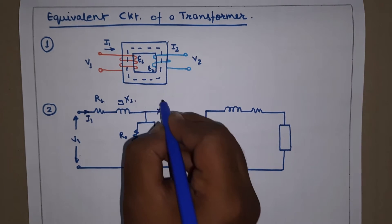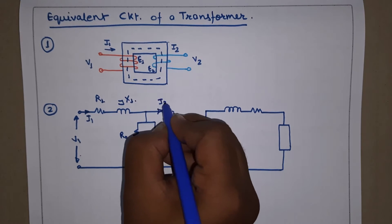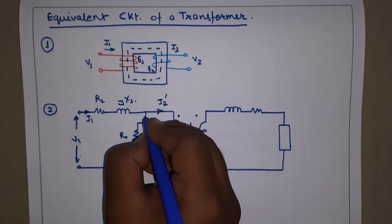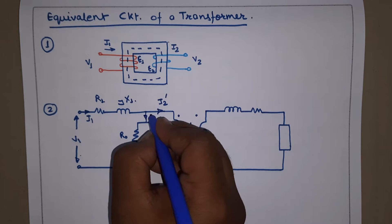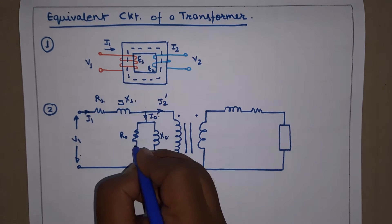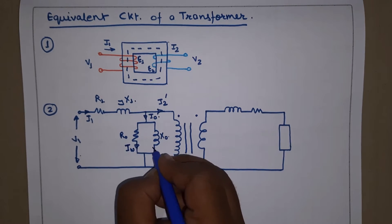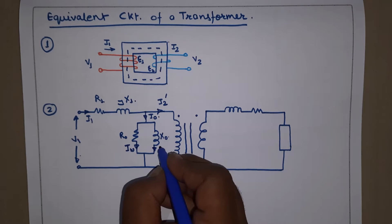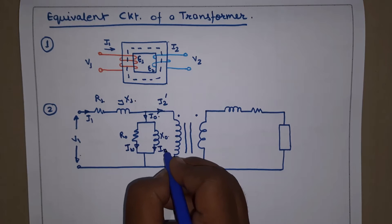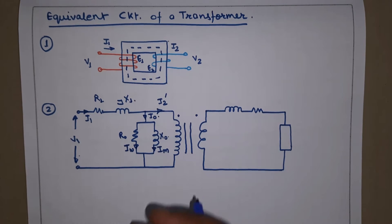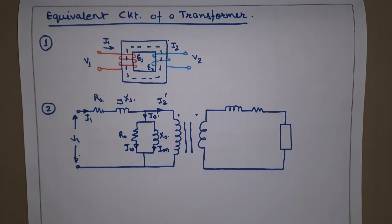The current in the primary is i1, and here the current is i2-dash — the secondary current referred to primary. The current i-naught splits into i_w (the core loss component) and i_m, the magnetizing current.